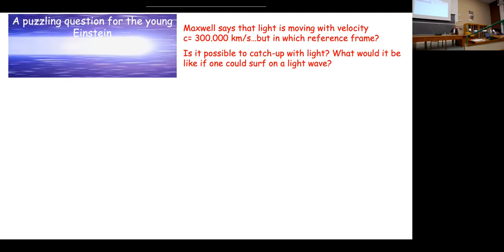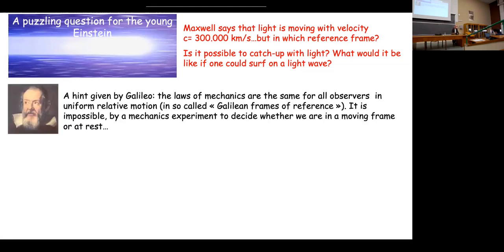Since he was very young, Einstein was interested in understanding Maxwell's equations. One question he asked himself was: is it possible to catch up with a light beam? What would it be like to surf on a light wave at the same speed? Very strange things should happen — the electric and magnetic fields would no longer vary in time. But the propagation of light comes from the fact that a changing electric field produces a magnetic field, which in turn produces an electric field, and so on. If you are frozen at the speed of light, this mechanism breaks down.